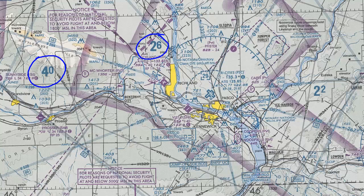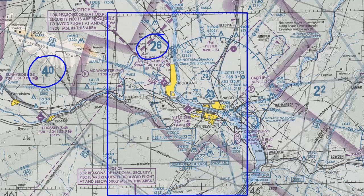The MEF is a minimum altitude that you can fly for a given quadrant and still clear all obstacles within that quadrant. The MEF is written in thousands and hundreds of feet, with a large number representing thousands and a small number representing hundreds. If the altitude is over 10,000, there will be two large numbers and one small number. To read the MEF, simply add two zeros to the end of the number — in this case, 4,000.